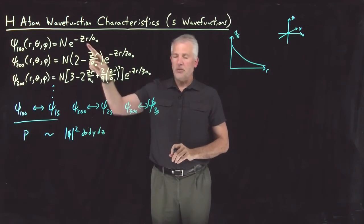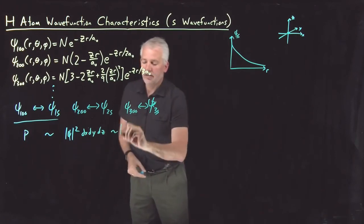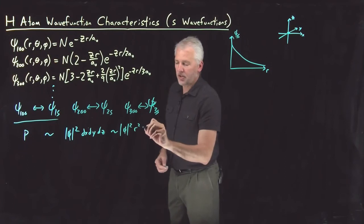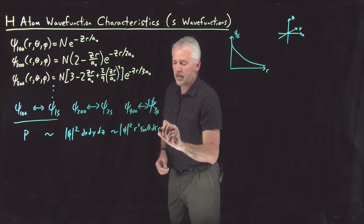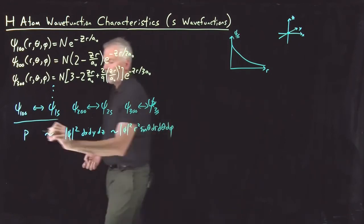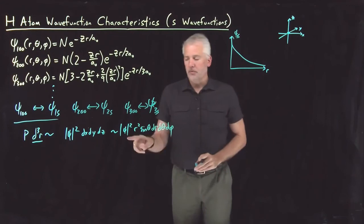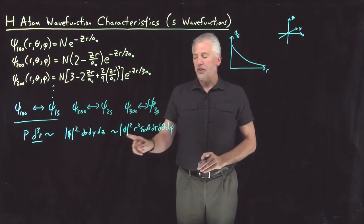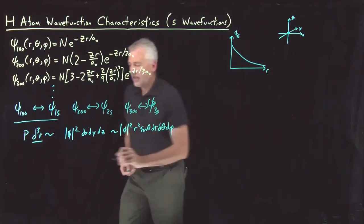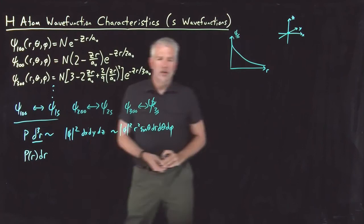Since we've written the wave functions in terms of r, theta, and phi, I don't really want to write dx dy dz. Instead, when I convert to polar coordinates, that's r squared sine theta, dr, d theta, d phi. So that's an important difference. The probability of finding an electron in some small three-dimensional volume of space is not just the wave function squared — it's the wave function squared times r squared times sine theta, dr d theta d phi.